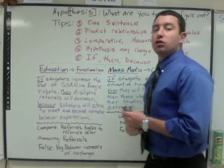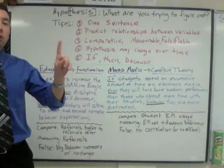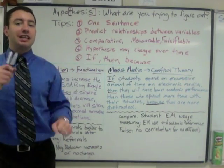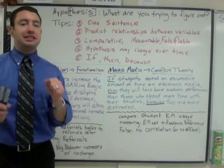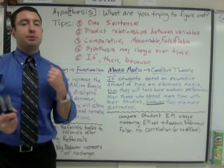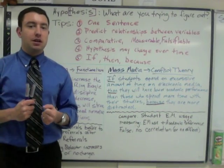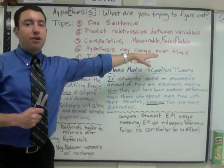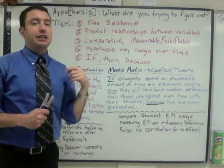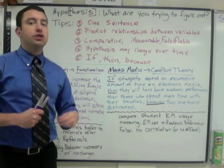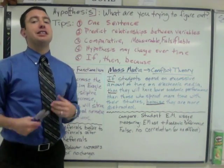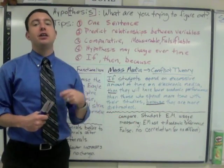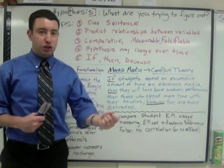Here are some tips to creating a hypothesis. Number one, it should be one sentence. Number two, you're trying to predict the relationship between two variables — two things that could be changing. Number three, it should be comparative, measurable, and falsifiable, meaning that you should be able to prove it wrong. You should be comparing two variables and it should be something you can measure with a survey, with observation — something that's measurable.